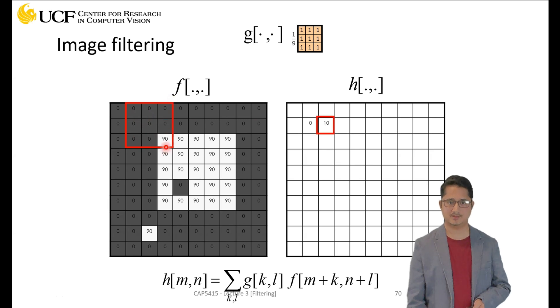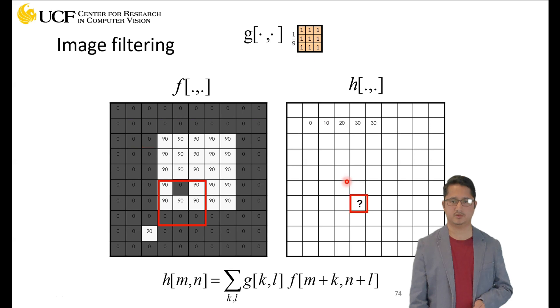This is 90, so if you take the average it's going to give you 10, because all the other locations in the filter will become zero. Only this will give you 90, and if you divide that with nine that's going to give you 10.